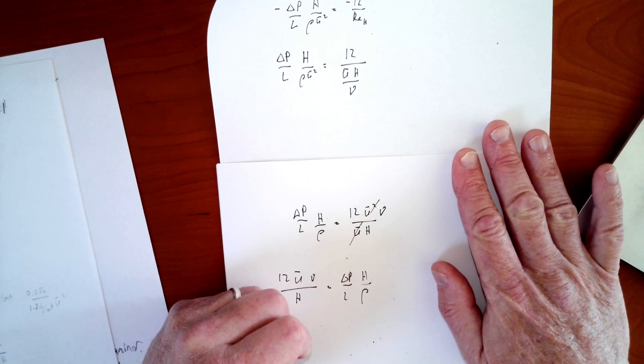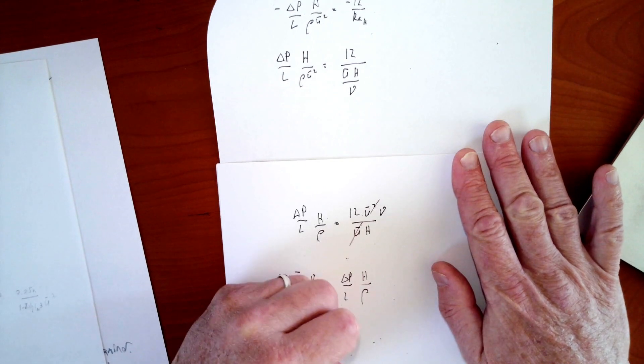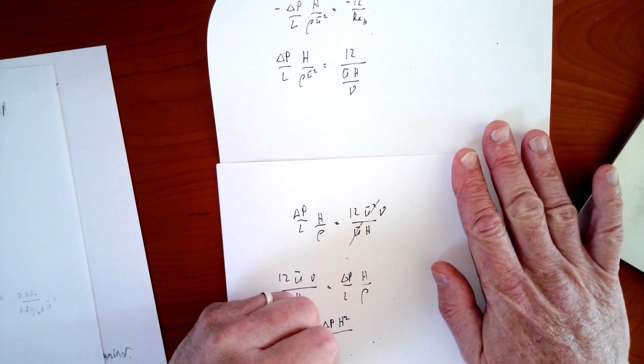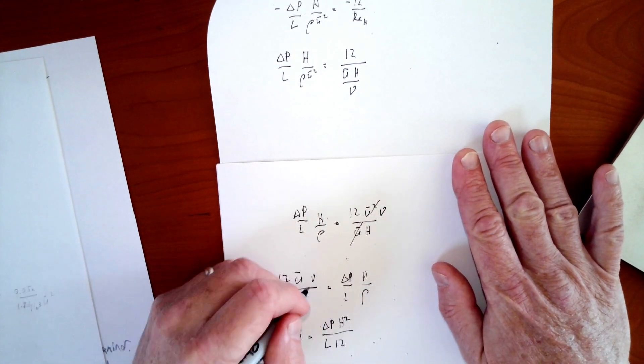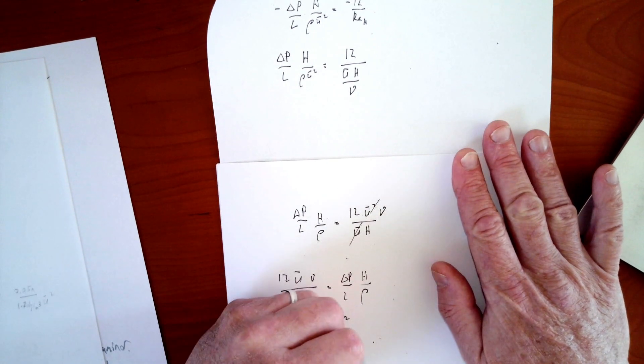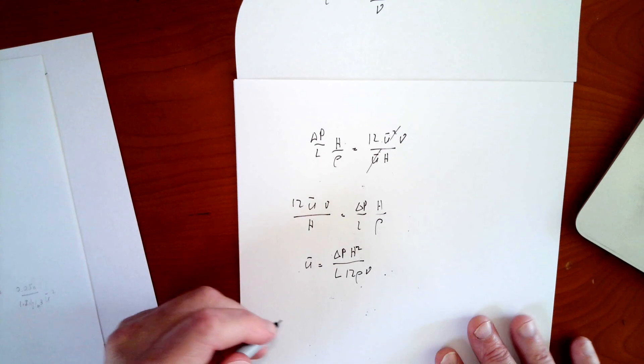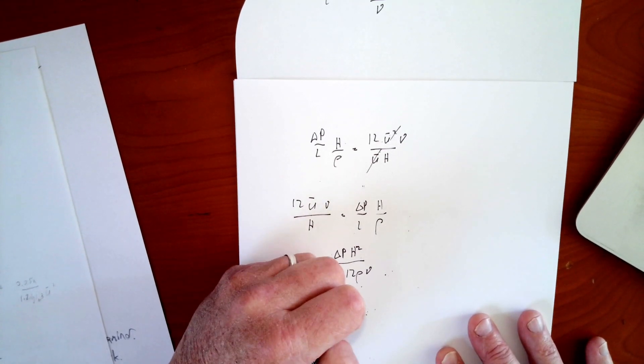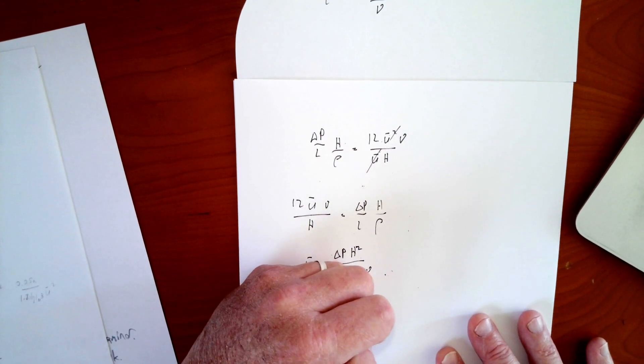This u bar is going to cancel that squared term. So I'm going to pull that over to the left. I'll just move everything first. nu over h is equal to delta p over l h over rho. u bar is equal to delta p h squared over l times 12 rho nu. So that's pretty much where it is. u bar is equal to delta p over l times h squared over 12 rho nu.